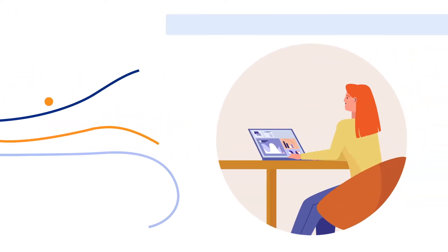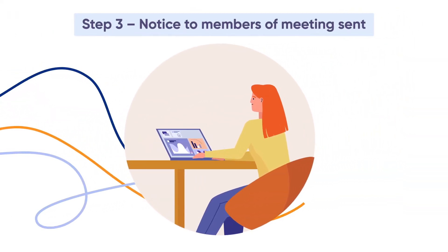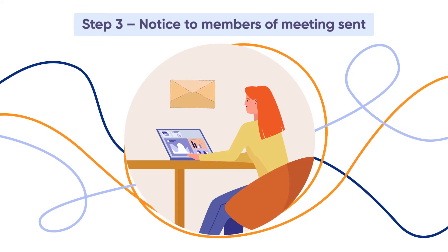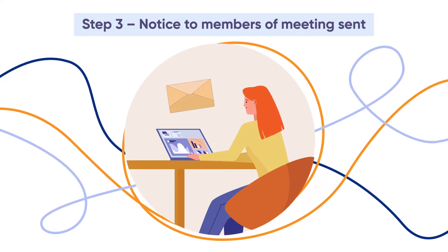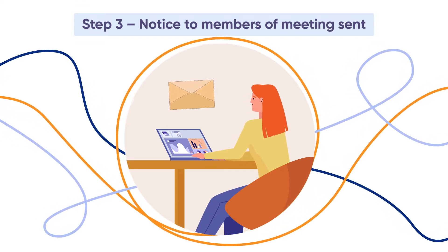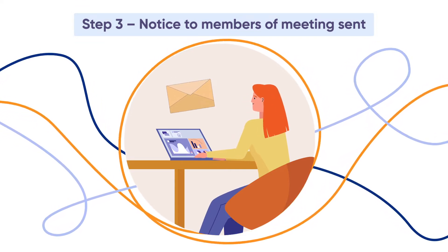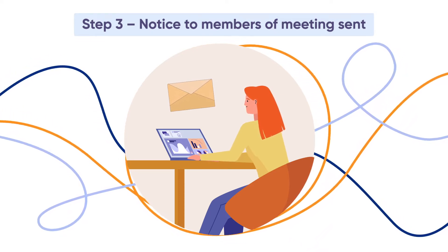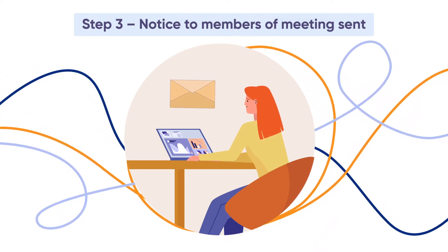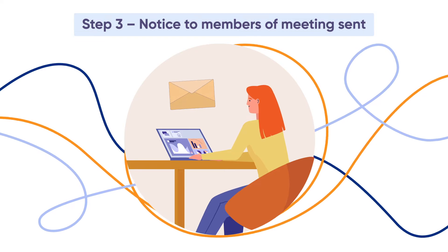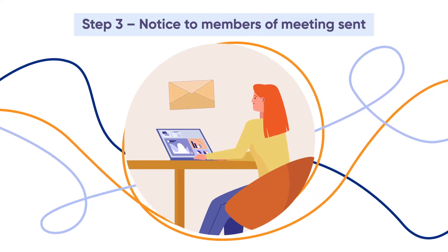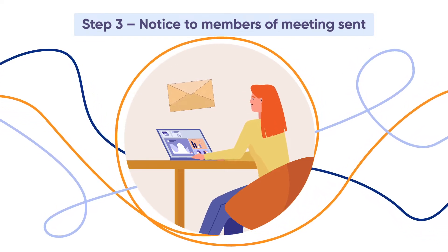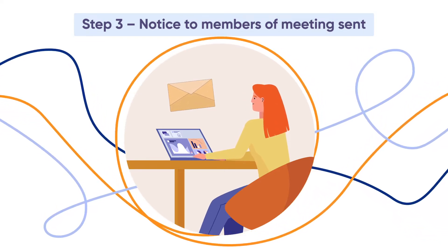Step 3: Notice to members of meetings sent. Members must ordinarily receive 21 days' notice of the proposed members' meeting. Commonly, we request consent to short notice be provided to the members, and as long as 95% of members agree, the meeting of members can then be called immediately and the resolutions passed by a circular.